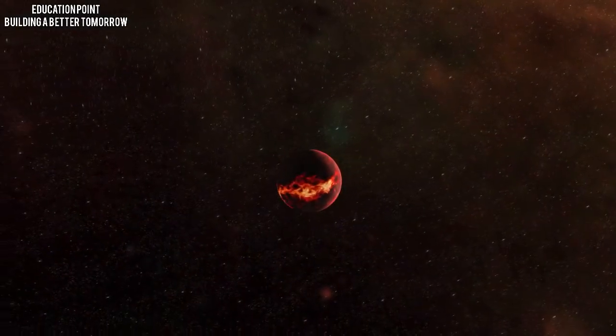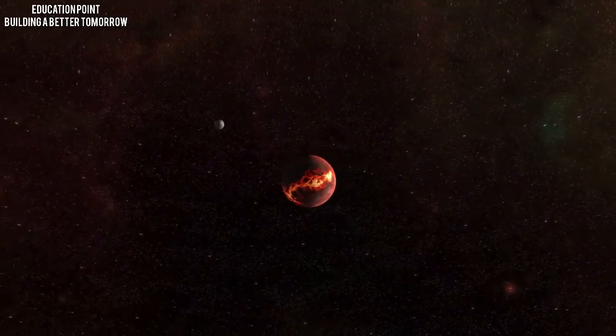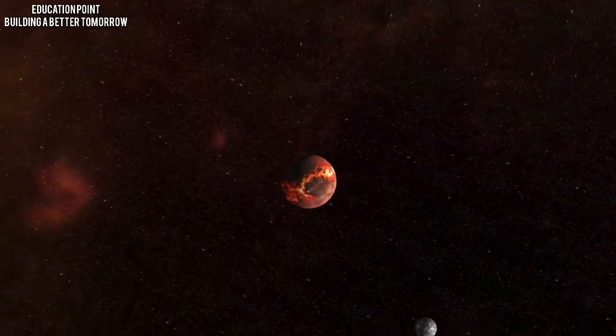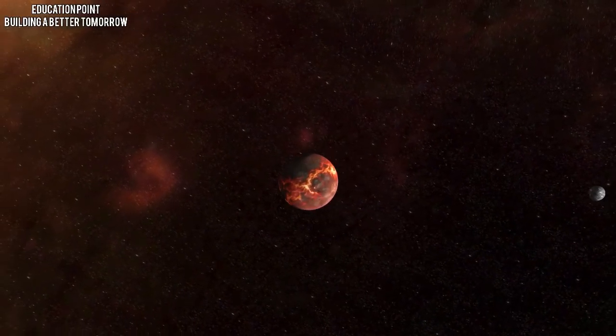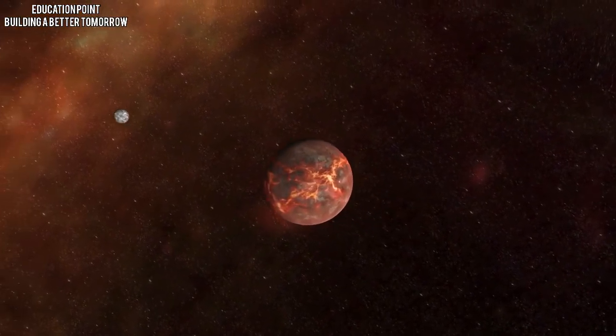The tidal phenomenon that occurs between the Earth and the Moon led to various changes. Firstly, the Moon became tidally locked with the Earth, meaning it takes the Moon just as long to rotate around its own axis as it does to revolve around the Earth.